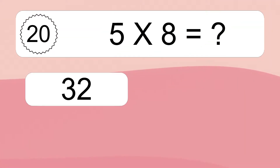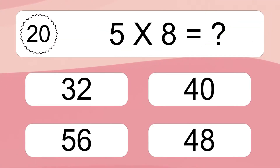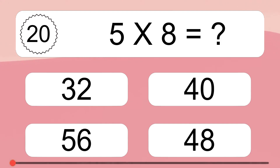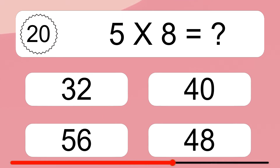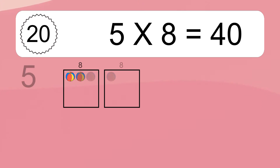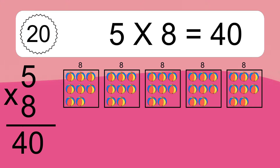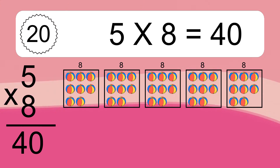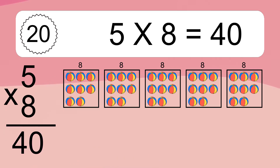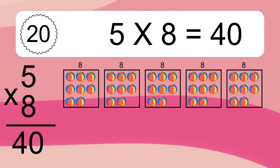5 times 8 equals what? 5 times 8 equals 40. We have 5 boxes, and each box has 8 colorful balls inside. If you count all the balls in all the boxes together, you will have 5 times 8 balls. This equals 40 balls.